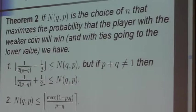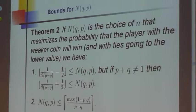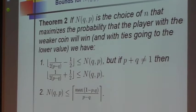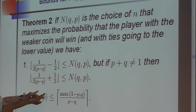Here are some bounds. If capital N(q,p) is the choice of n that maximizes the probability—the thing that turned out to be 26 several slides back—capital N is the one that maximizes the probability, the ties going to the lower value. Then capital N(q,p) is greater than or equal to this...